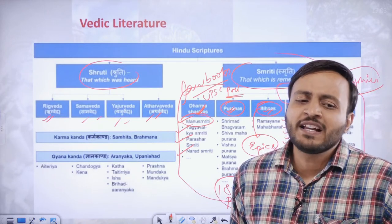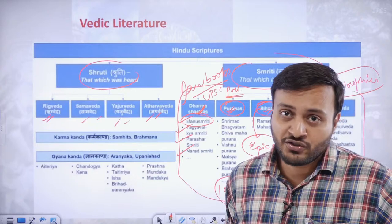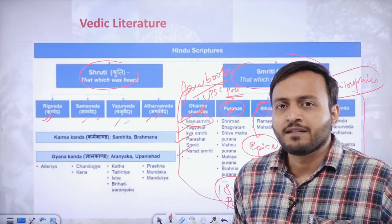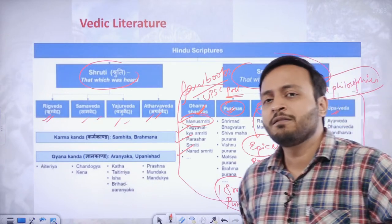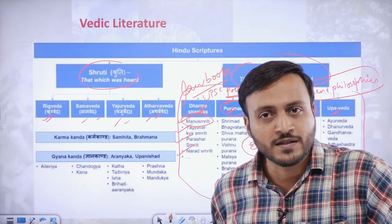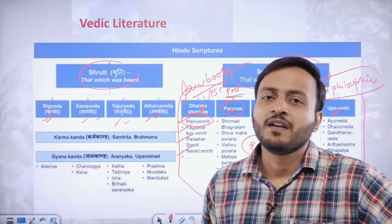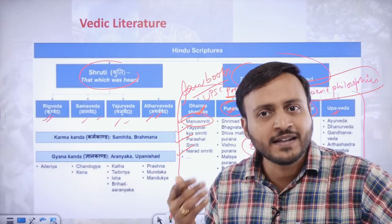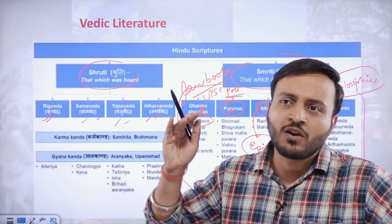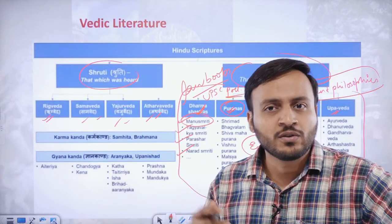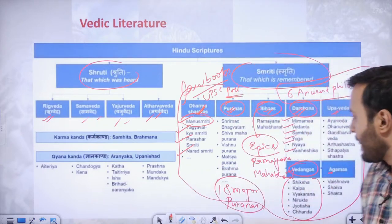Siksha deals with phonetics. Kalp means rituals. Vyakaran is the grammatical structure of shlokas, mantras, and hymns. Chhand means the matrices or compositional structures. Nirukta is etymology — the origin of a particular word. Jyotish is astronomy — at which particular position of planets and stars you should recite those Vedic hymns for optimum result. These are the six Vedangas — Vedangas means the limb of the Vedas.